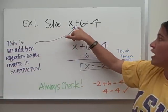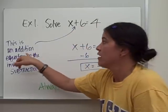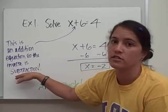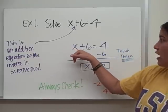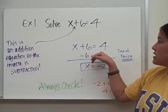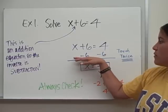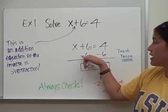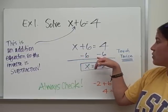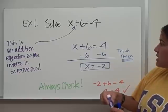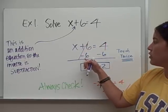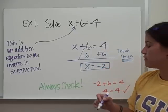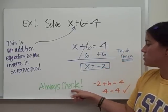Example one: solve x plus 6 equals 4. This is an addition equation, so the inverse of addition is subtraction, which means we're going to use subtraction to solve this problem. I've rewritten the equation — x plus 6 equals 4 — and subtracted 6 from both sides. That is called the subtraction property of equality. When I subtract 6 from 6, that gives 0, and 4 minus 6 gives me negative 2. So x equals negative 2 is my answer.